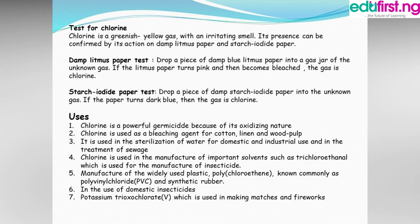Test for chlorine: Chlorine is a greenish-yellow gas with an irritating or choking smell. Its presence can be confirmed by its action on damp litmus paper and starch iodide paper. Using damp blue litmus paper: if a piece of damp blue litmus paper turns red and becomes bleached, the gas is chlorine. Using starch iodide paper: if the paper turns dark blue, the gas is chlorine.